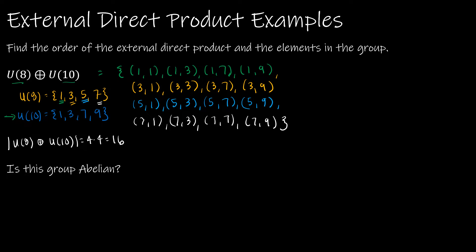Is this group abelian? A lot of what we'll discuss in this chapter concerns which groups are isomorphic to which other groups. One property says that if you have an external direct product of abelian groups, then the external direct product is abelian. But if even one of the component groups is non-abelian, the whole direct product is non-abelian. Is U8 abelian? Yes — you can multiply in any order mod 8 and get the same result. Is U10 abelian? Yes. So is this group abelian? Yes, it is abelian.